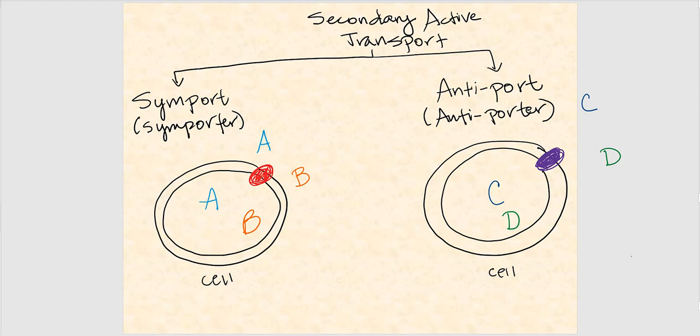Looking at two substances, A and B. Inside the cell is intracellular and outside is extracellular. We have a high concentration of A extracellularly and a low concentration of A intracellularly. Substance B has a low concentration extracellularly while inside the cell we have a high concentration of B. We're going to move A following its concentration gradient, from outside to inside the cell, from high to low. This is diffusion.